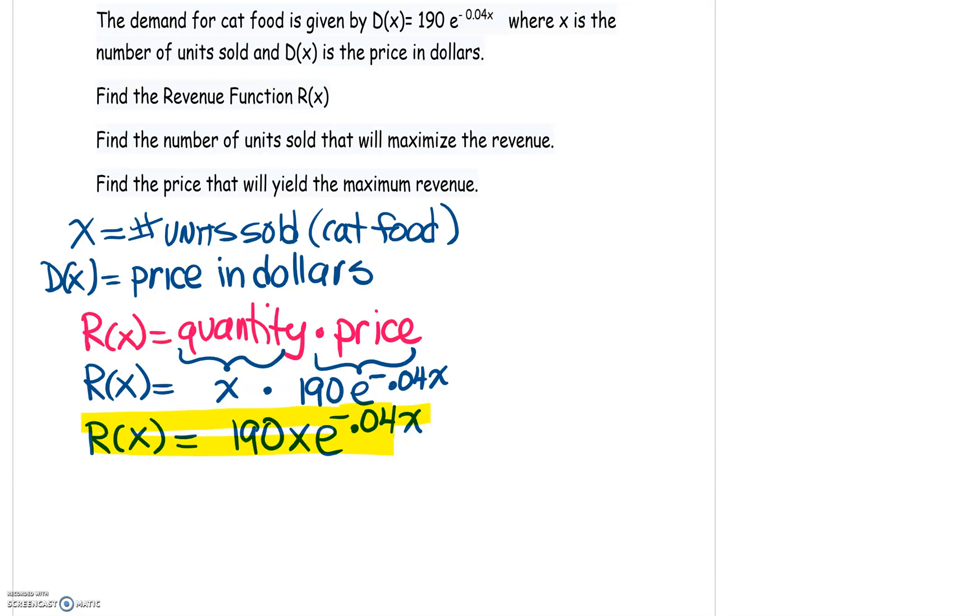Now this revenue function is the product of two functions. So think of it as an F of X times a G of X. So we're going to have to use the product rule to get the derivative. So if you recall the product rule, at least the way I remember it, is F prime times G of X plus G prime of X times F of X.